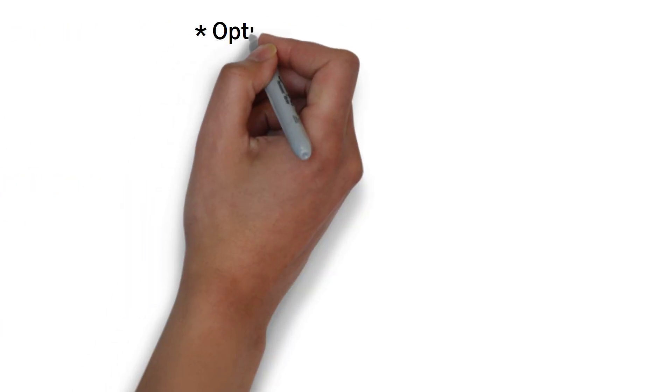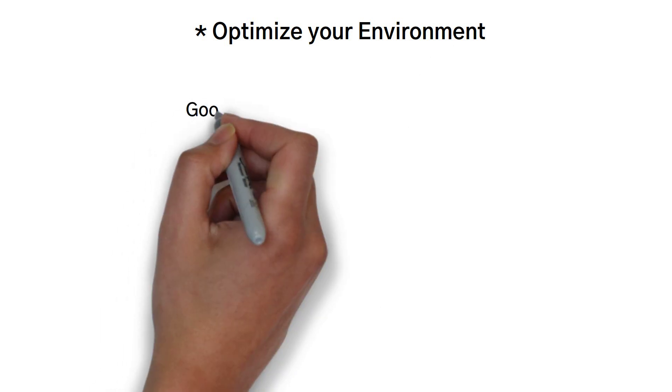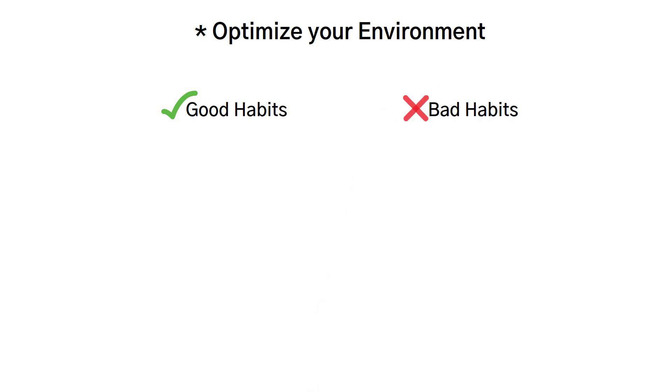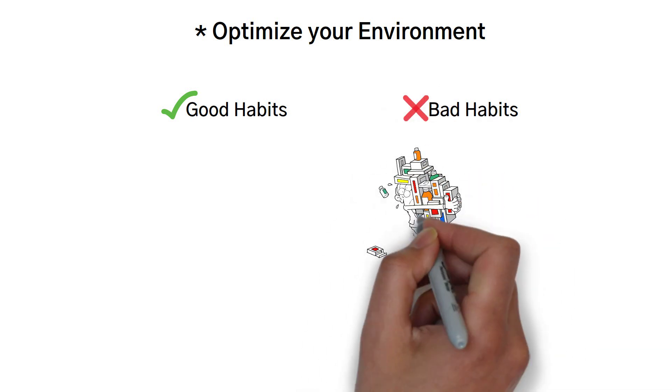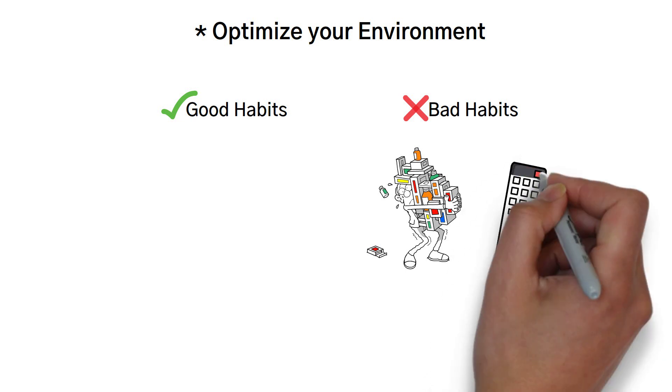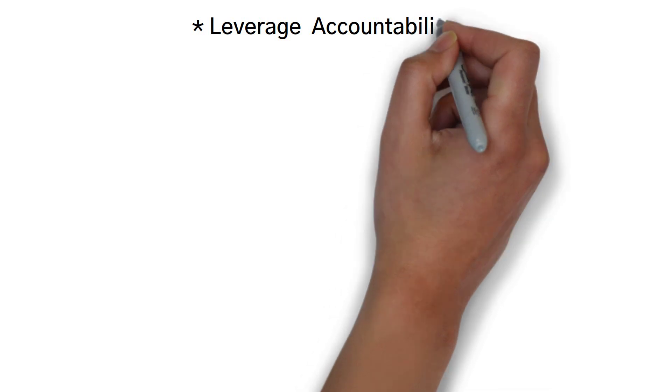Another way to make it obvious is to optimize your environment. This is another obvious and effective way to encourage good habits and discourage bad ones. For example, throw away or lock up unhealthy food from your pantry or put the TV remote in the next room or lock it away or keep your phone six feet away while you're working or put it in another room. Another way to make change obvious is to leverage accountability.